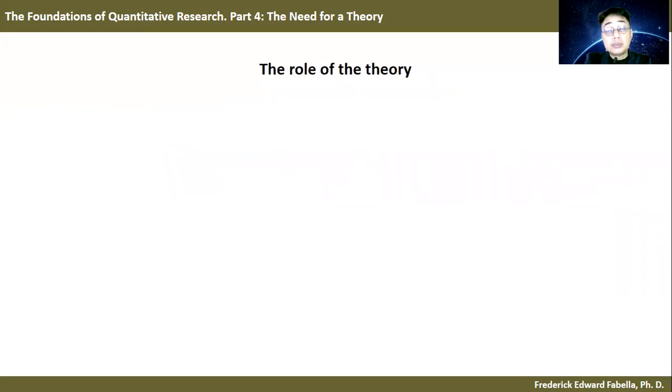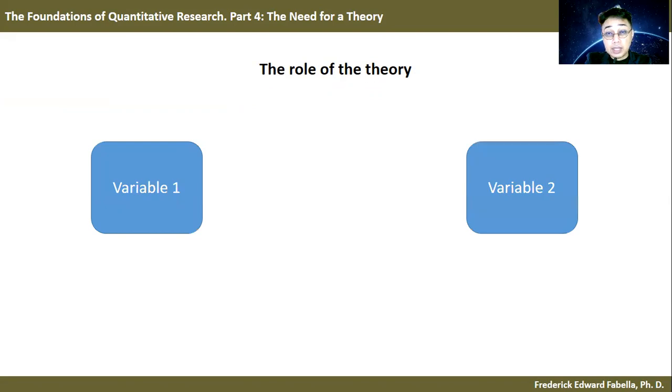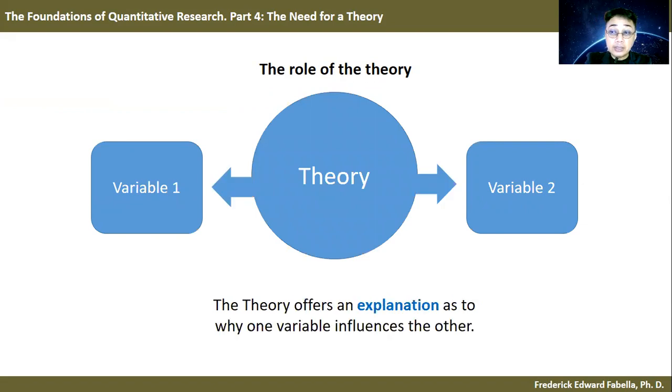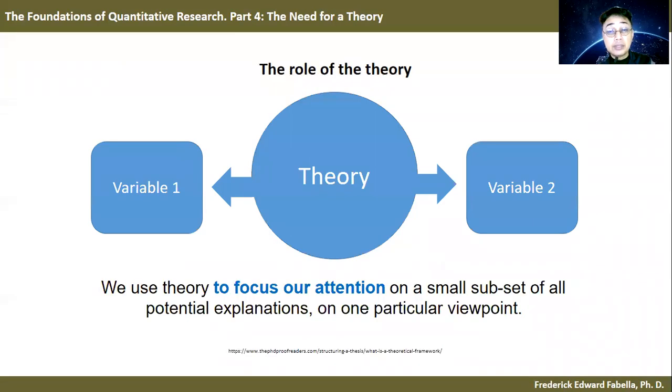What is the role of the theory? When you have variables—variable one and variable two—the role of the theory is that it connects your two variables. It also offers an explanation as to why one variable influences the other. We use theory to focus our attention on a small subset of all potential explanations, on one particular viewpoint.